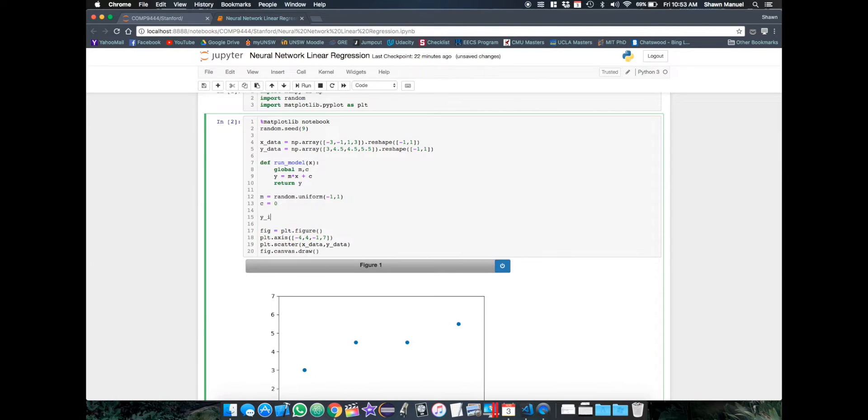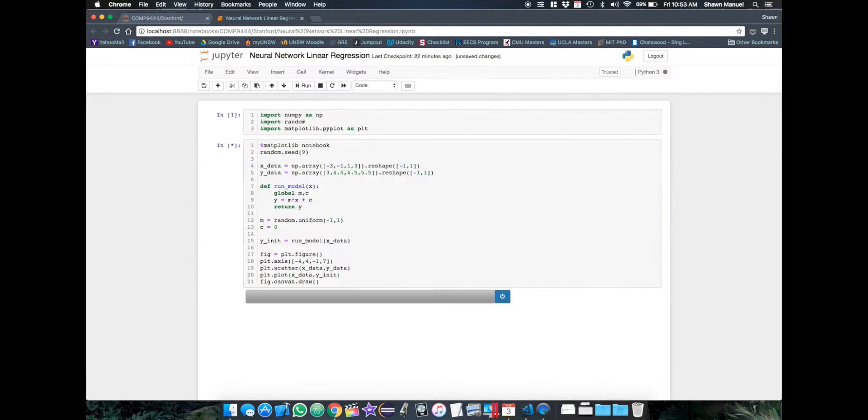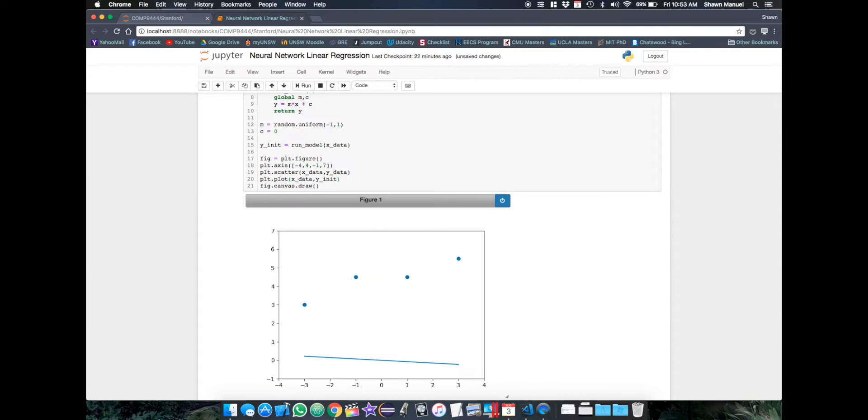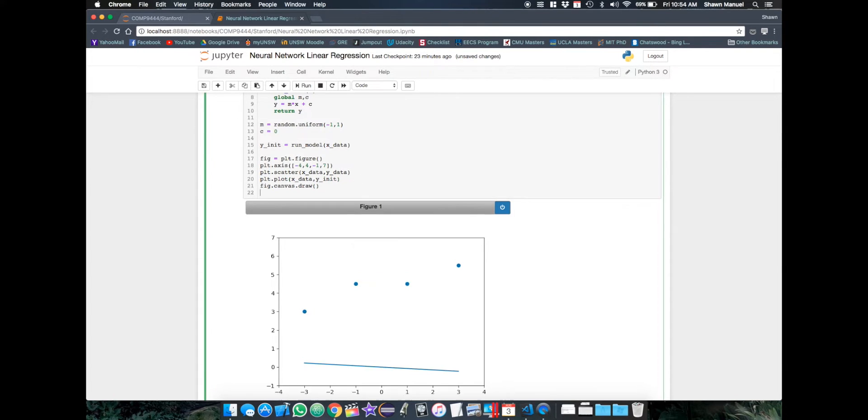So now let's plot our initial model against the data. We'll save our initial predictions in an array called yinit and just add it to the plot. So we can see that our initial model isn't too good at the moment, but this is actually the fun part where we can train it to the data.